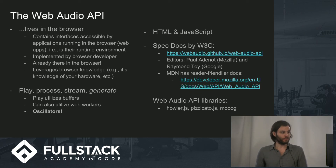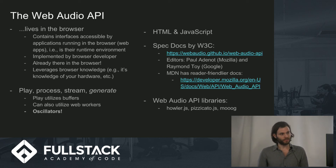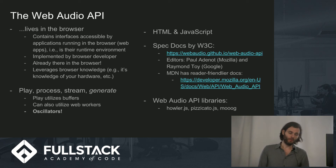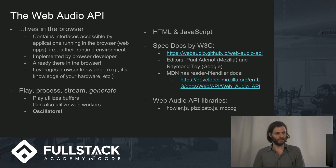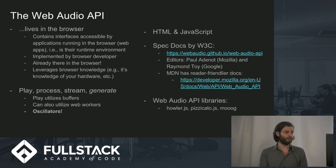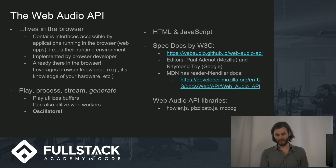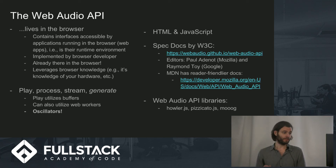It contains interfaces accessible by applications running in the browser. It's browser-neutral — the docs are maintained by someone from Mozilla and someone from Google. So if you're using it in Chrome, that implementation is Chrome's, but Mozilla maintains a more general doc. What can you do with it? You can play, process, stream, and generate audio. Play is going to utilize buffers, and it can also utilize Web Workers. It provides oscillators, which is really neat — it can actually generate sound in the browser.